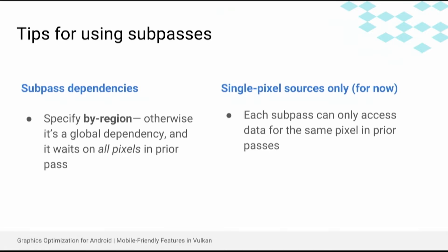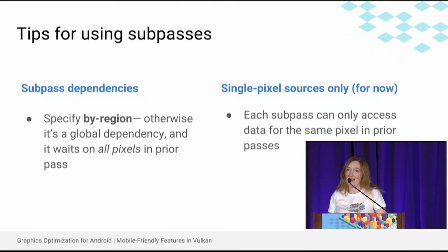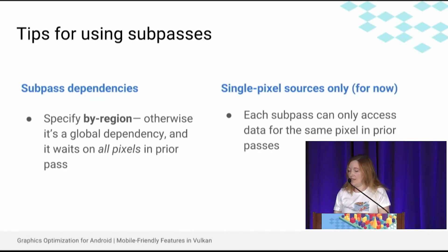Also, you want to set your dependencies when using this mechanism as by region. Otherwise, by default, they're considered to be global, and you have to wait for all of the pixels of the previous pass to complete before beginning your current pass — that defeats the purpose. And for now, if you're using this mechanism, you can only benefit if your sub-pass needs to access a single pixel from the prior pass; otherwise it's not by region. So blur and bloom can't benefit yet, though there's room for this to change in the API in the future.